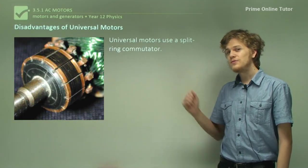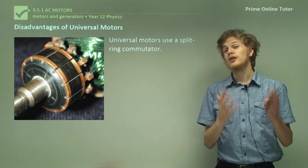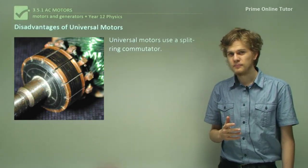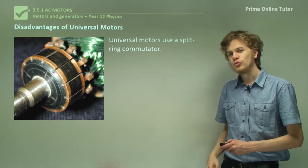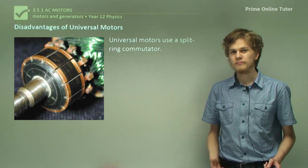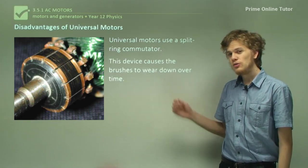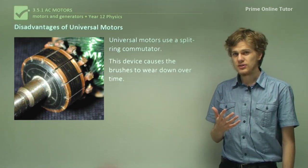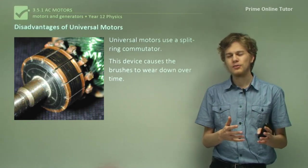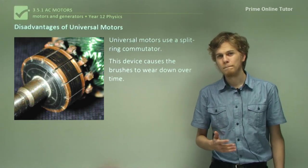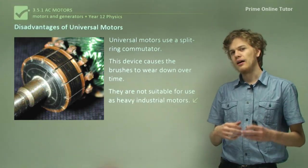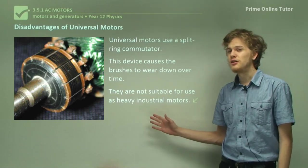One of the disadvantages of the universal motor is that it uses a split ring commutator, just like a DC motor. We know a little bit about the problems caused by a split ring commutator. The commutator will cause the brushes to wear down over time. Every time the brush passes over the split of a split ring commutator, it wears down a little more. This means that universal motors are not really suitable for use as heavy industrial motors.